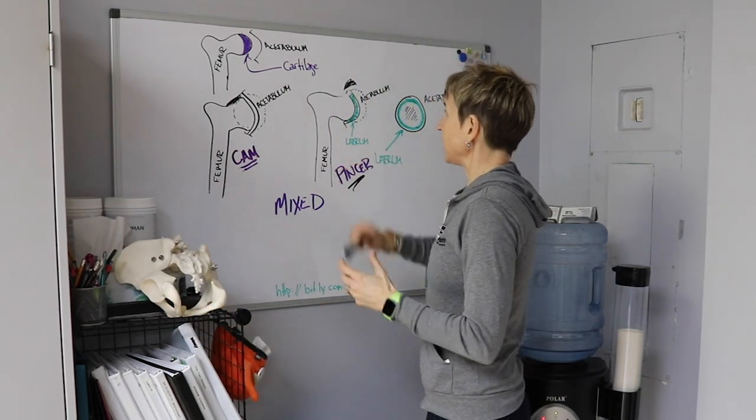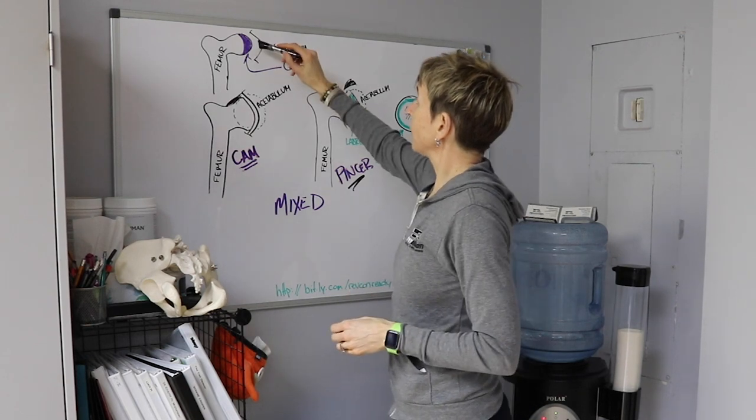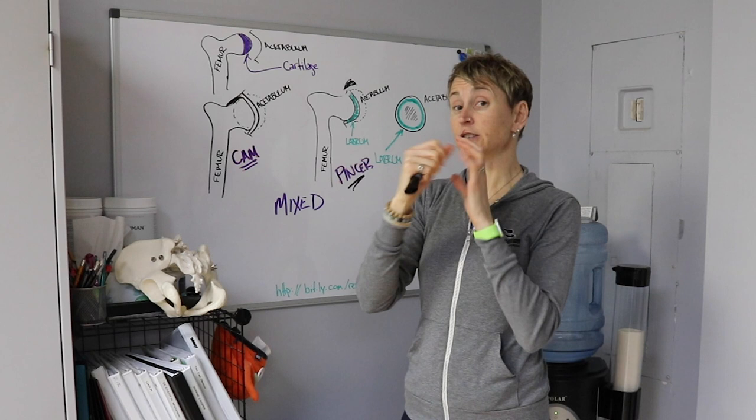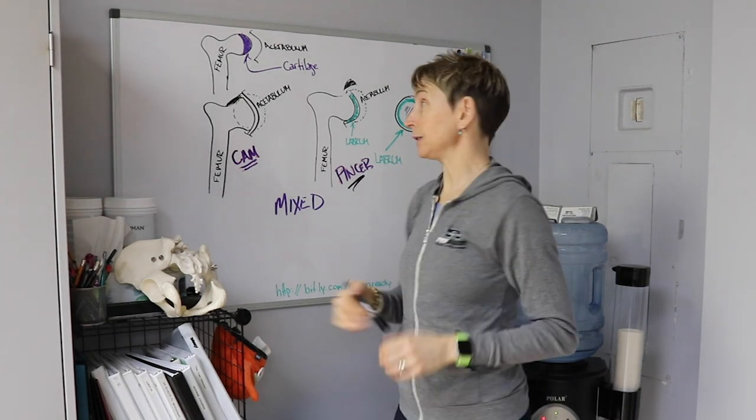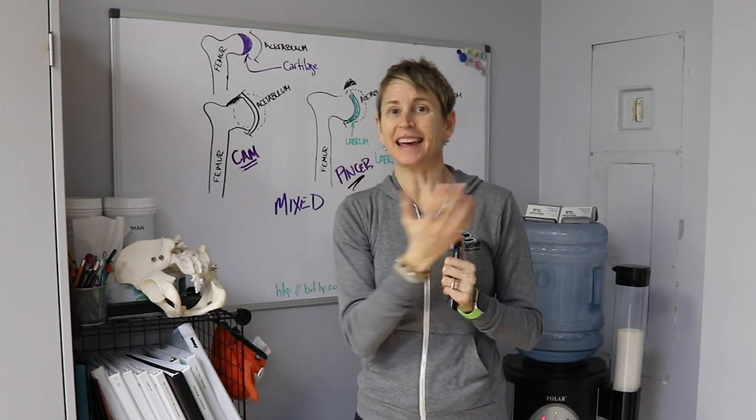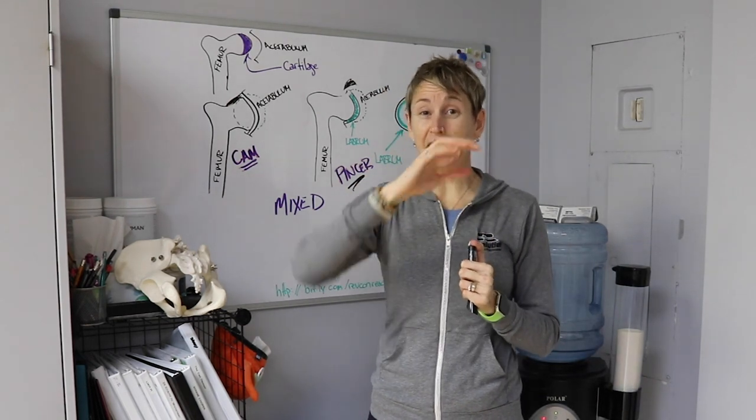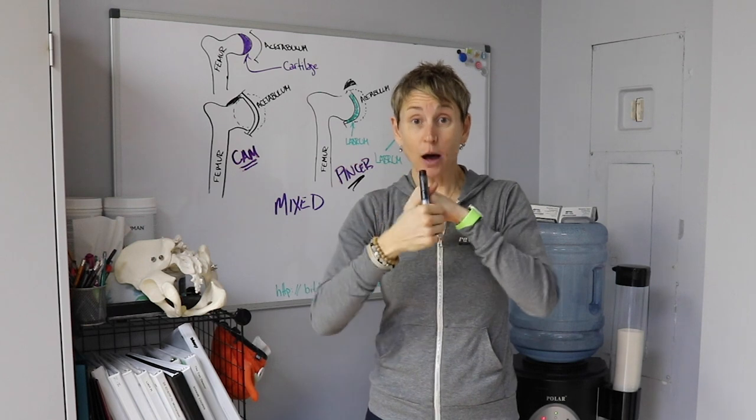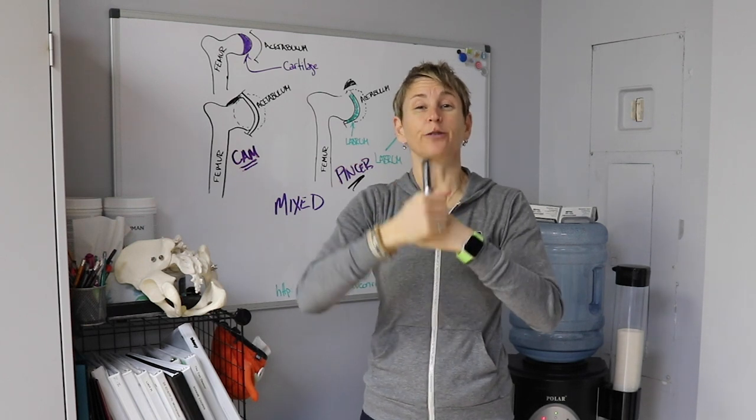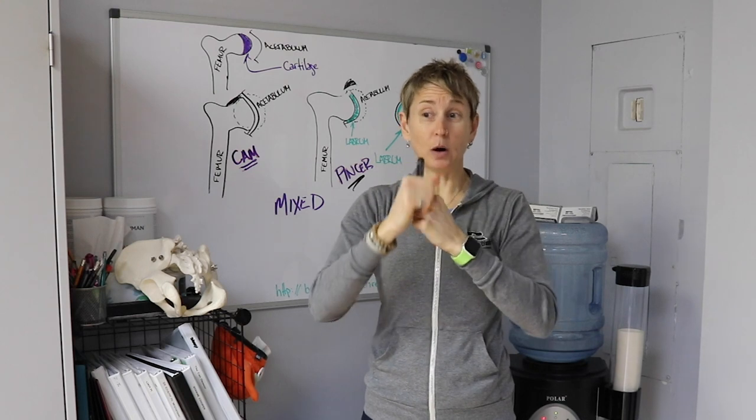So that's what the labrum is. Then you also have articular cartilage on the surface, on the surface of both the socket and the head of the femur. And it's just kind of like, it's almost a bit like synthetic ice. It's smooth. It's kind of glassy.